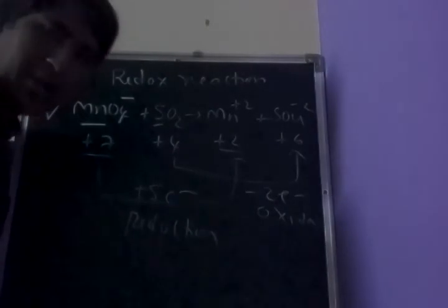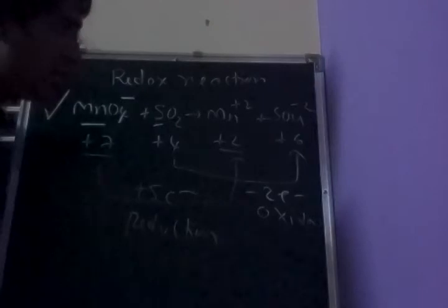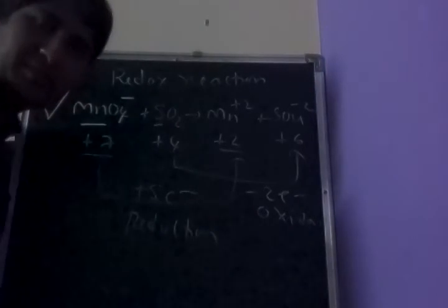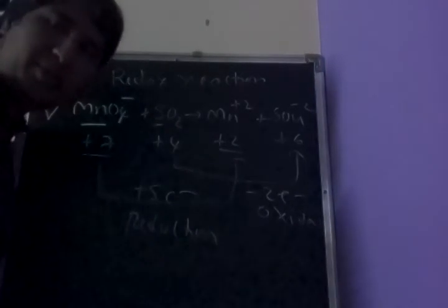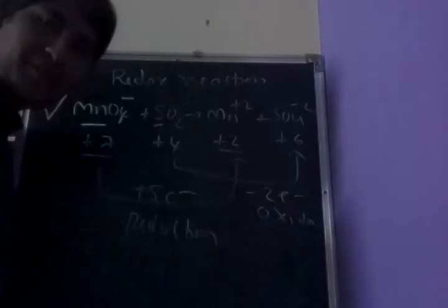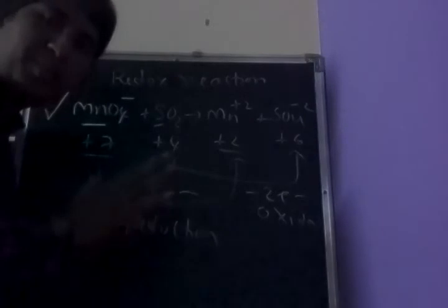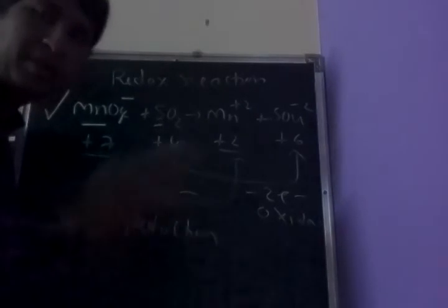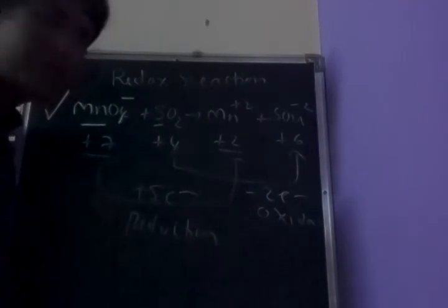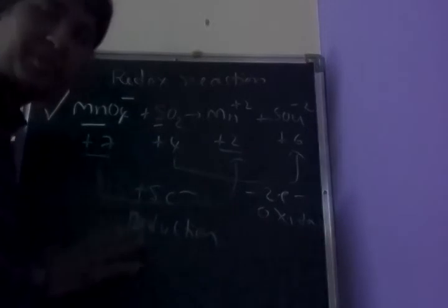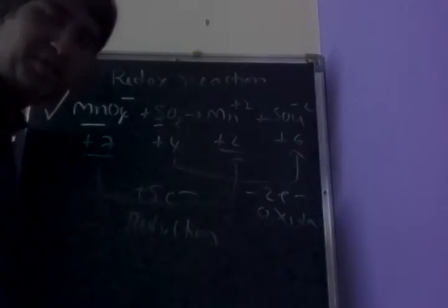Next we study balancing of redox reactions. Redox reactions can be balanced by using two methods: the half reaction method and the oxidation number method. In the half reaction method, the reaction can be balanced in acidic medium or basic medium. First we study the half reaction method in acidic medium.